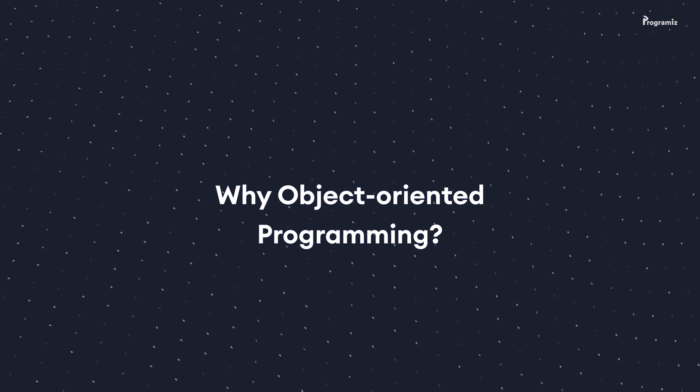Why object-oriented programming? As we have seen from our examples, creating objects allows us to organize related data and functionalities together. This helps us to write structured and flexible code. Instead of thinking in terms of individual data and functions, we start thinking in terms of objects and how one object interacts with another. This helps us to divide a complex problem into smaller sub-problems. Also, using an object-oriented style makes our code reusable because we can define multiple objects with similar attributes and functionalities from a single class.